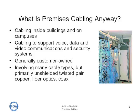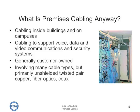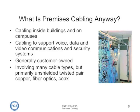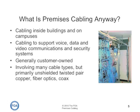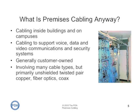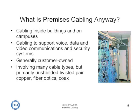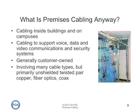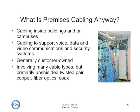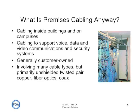Premises cabling is generally customer-owned, and it involves many different cabling types, but primarily unshielded twisted pair, fiber optics, and coax.